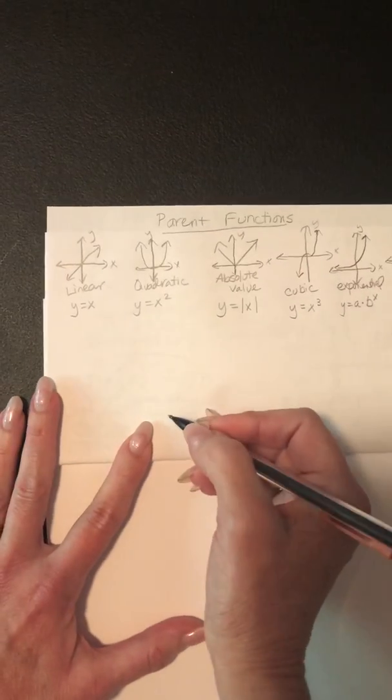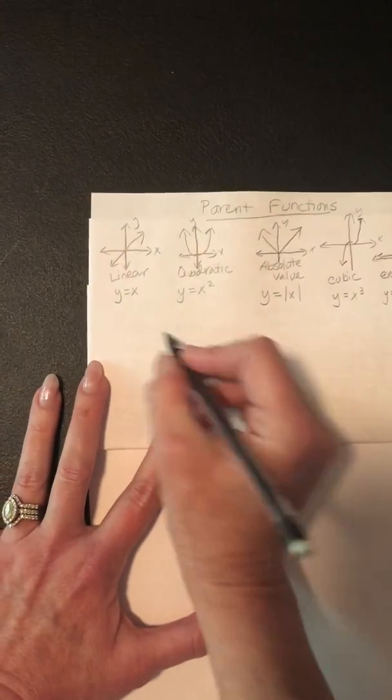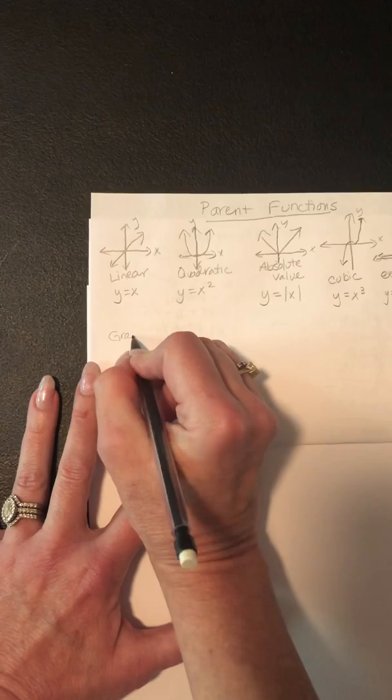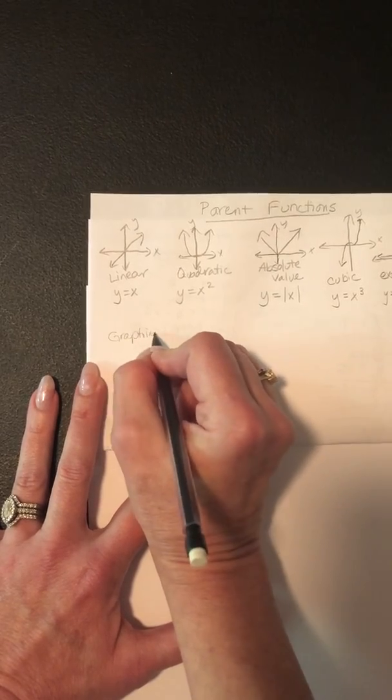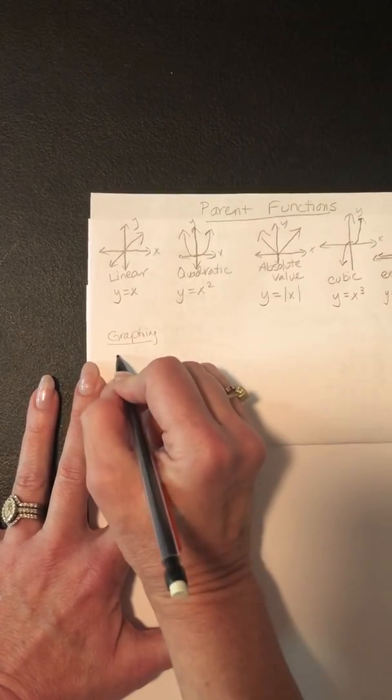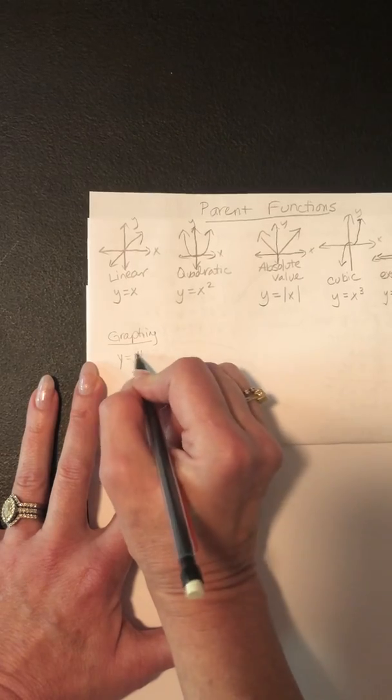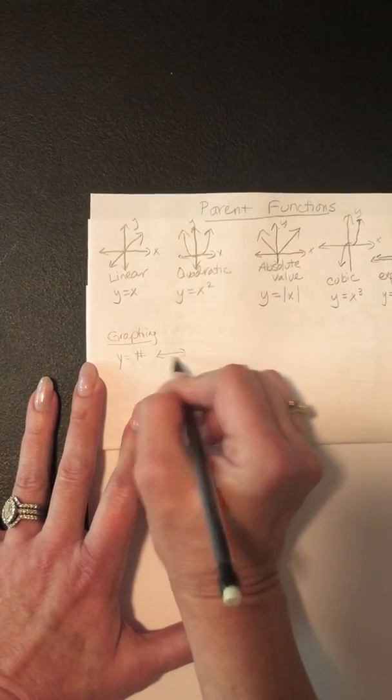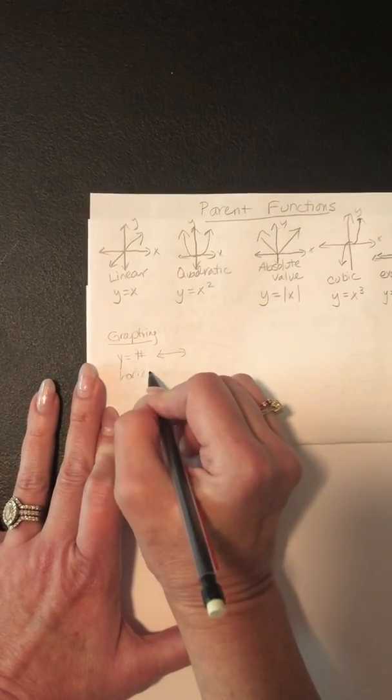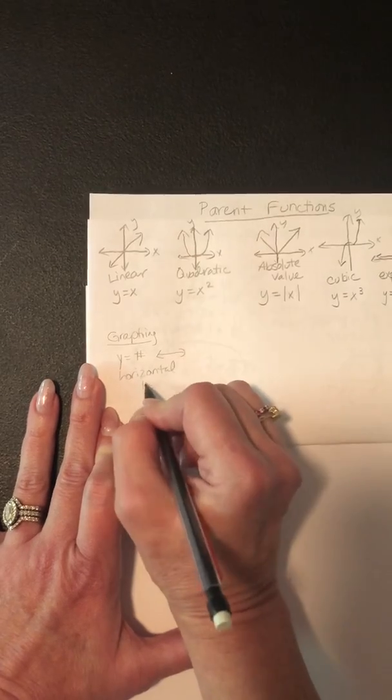So also don't forget, whenever you're graphing a line, just to go over that real quick. In graphing a line, if you have y equals a number, that's a horizontal line. And it has slope of zero.